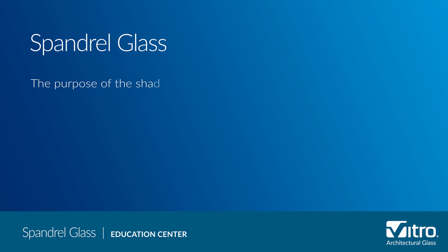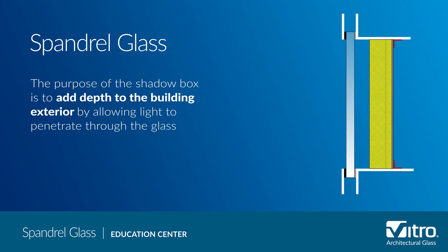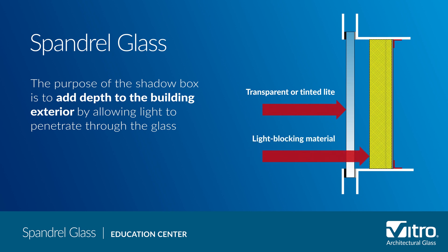Shadow box spandrels use a different fabrication process and are constructed with a transparent or tinted lite backed by an insulated metal sheet or some other form of light-blocking material. The purpose of a shadow box is to add depth to the building exterior by allowing light to penetrate through the glass into the facade while still hiding the building mechanicals.